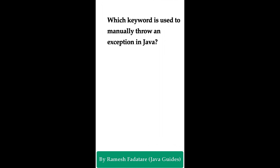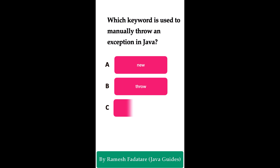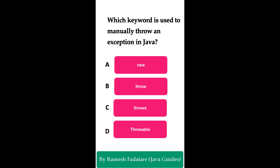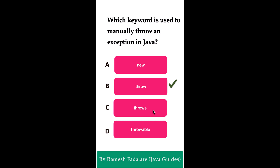Which keyword is used to manually throw an exception in Java? Option A: new keyword. Option B: throw keyword. Option C: throws keyword. Option D: Throwable class. The correct answer is the throw keyword. The throw keyword is used to explicitly throw an exception. The new keyword creates an object; the throws keyword declares an exception in a method signature; Throwable is a class; and throw is the keyword used to explicitly throw an exception.